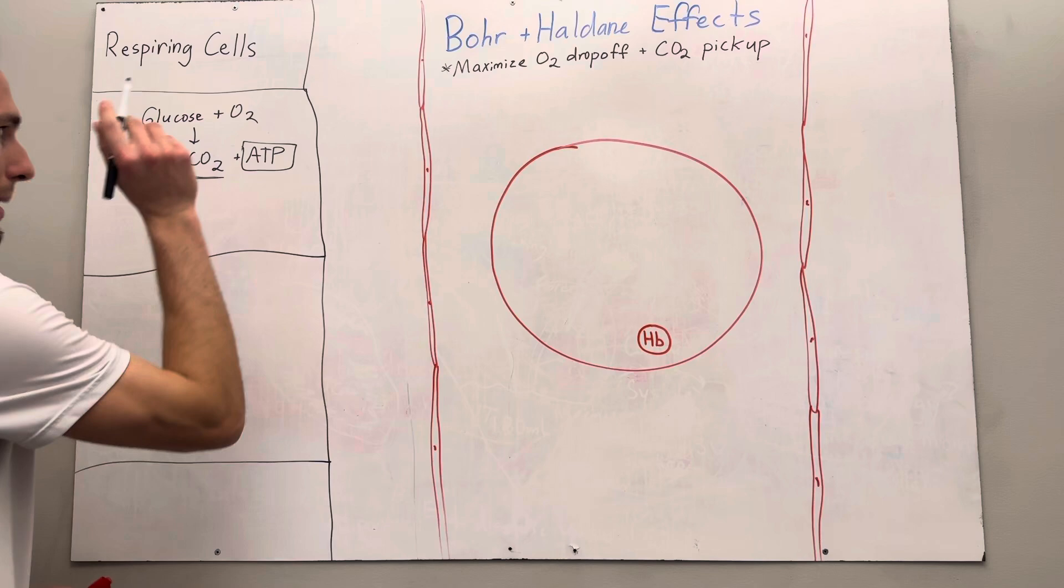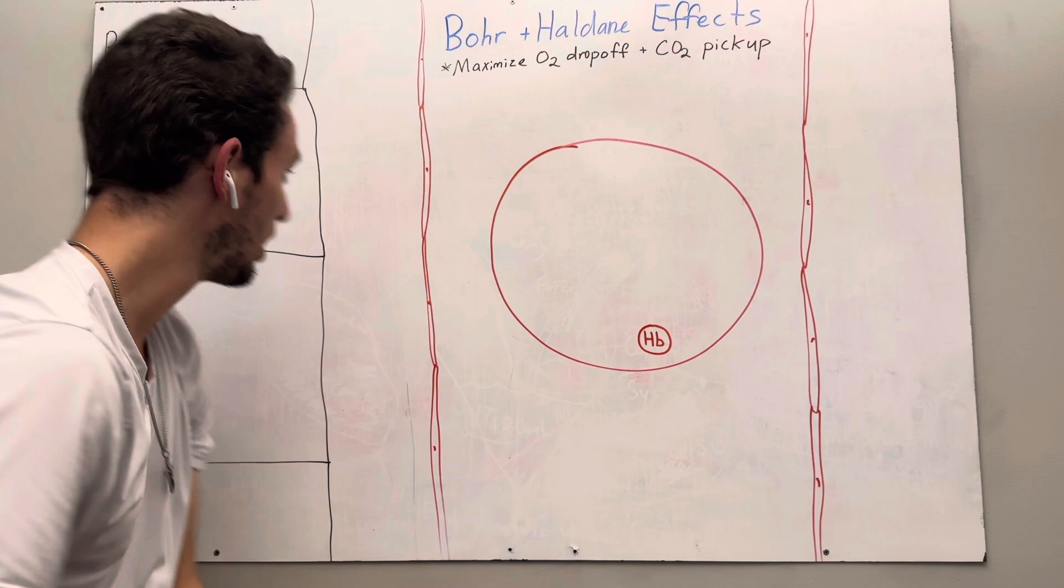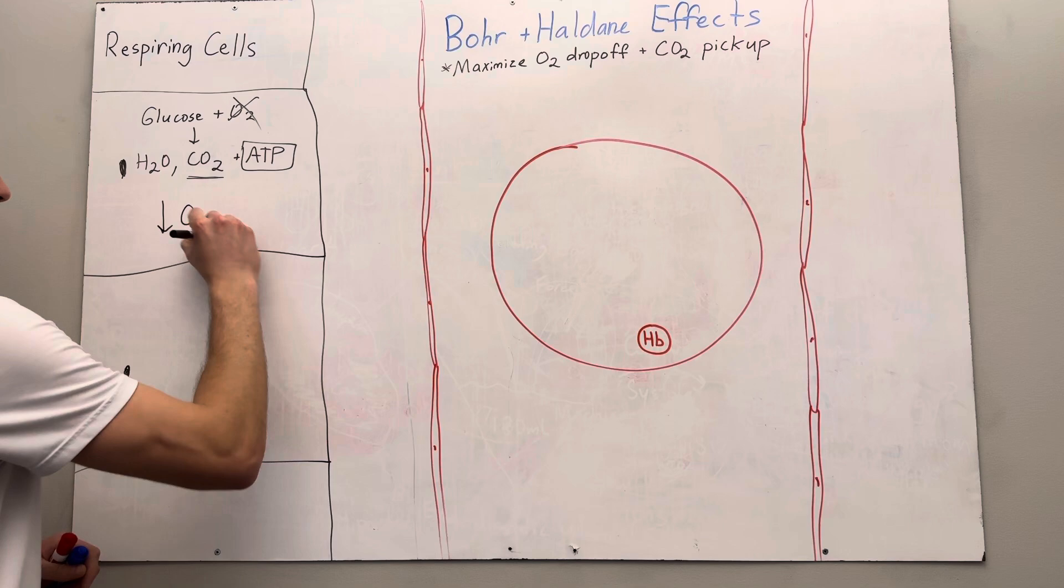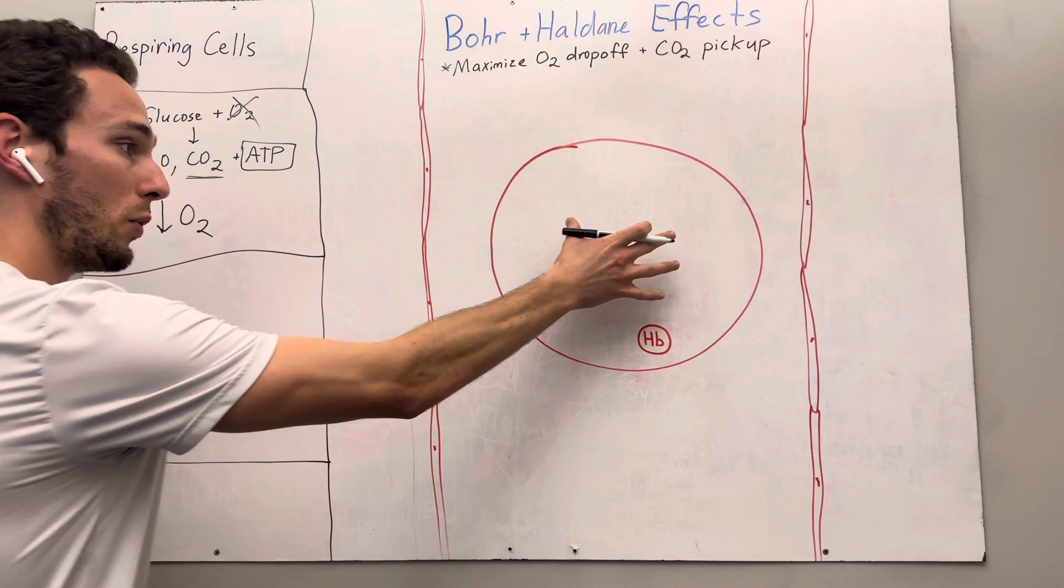So this carbon dioxide must get into the bloodstream and then get back to the lungs eventually to be breathed out. So we want to bring this carbon dioxide into the bloodstream. At the same time, oxygen is going to be used up by the cells. So in the cells, there's going to be very low amounts of oxygen, but they need more constantly. So where does it get it? It comes from the red blood cells themselves.